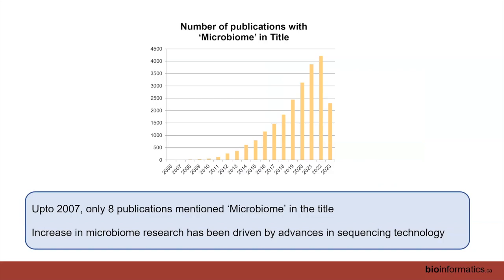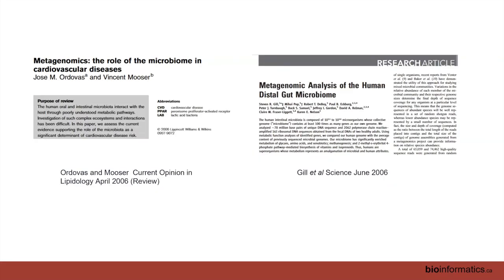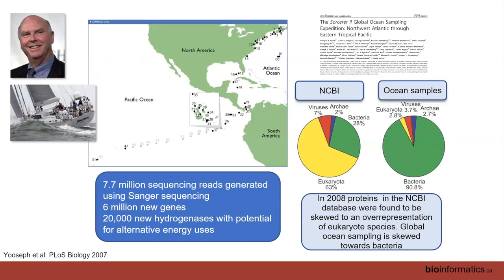We've seen a real explosion of microbiome studies in the last 15 years or so. This graph from PubMed shows the number of publications with 'microbiome' in the title: in 2007 there were only eight. This has really been driven by advances in sequencing technology. Two of the first studies mentioning microbiome in the title: one was a review article in Current Opinion in Lipidology, and the second was a paper in Science involving Jeff Gordon — a metagenome analysis using 16S sequencing and metagenomics to study the distal gut microbiome in humans, done in the days of Sanger sequencing.